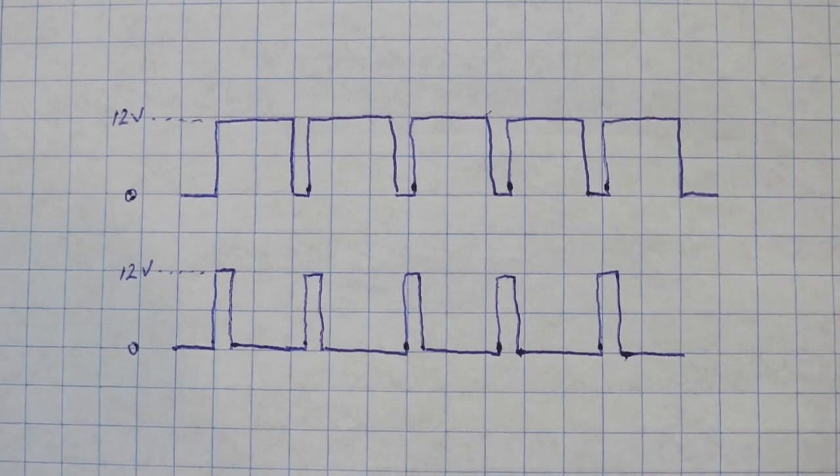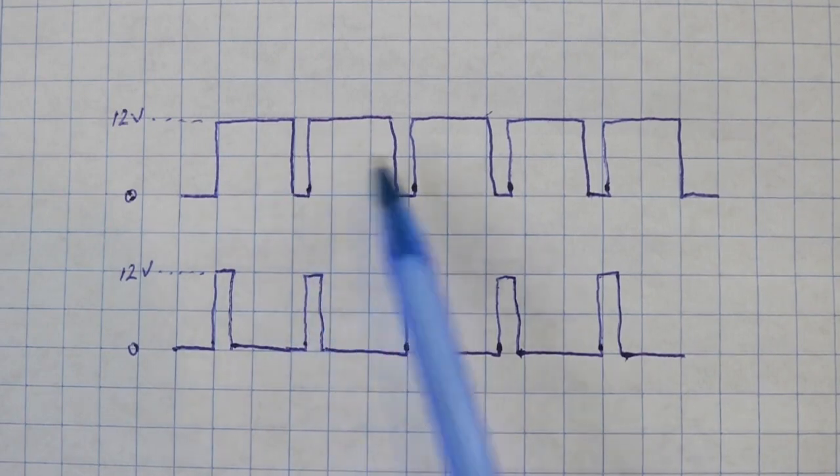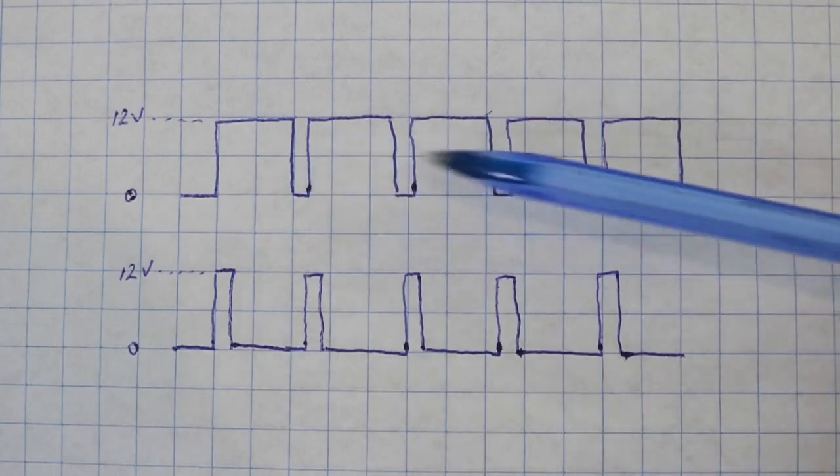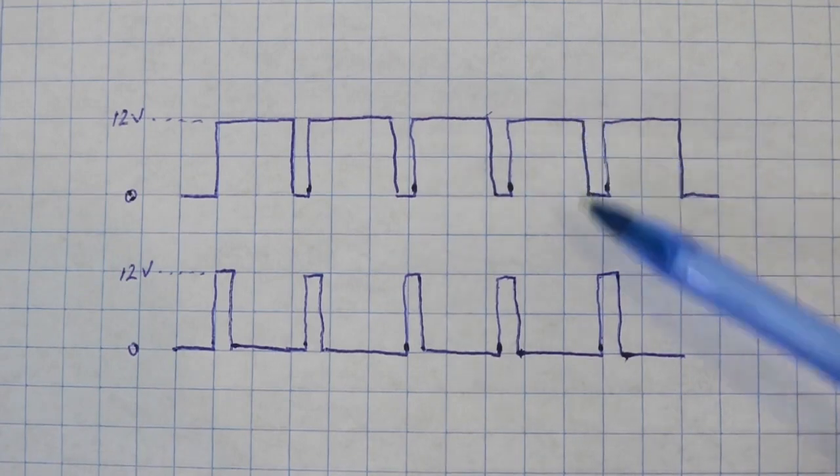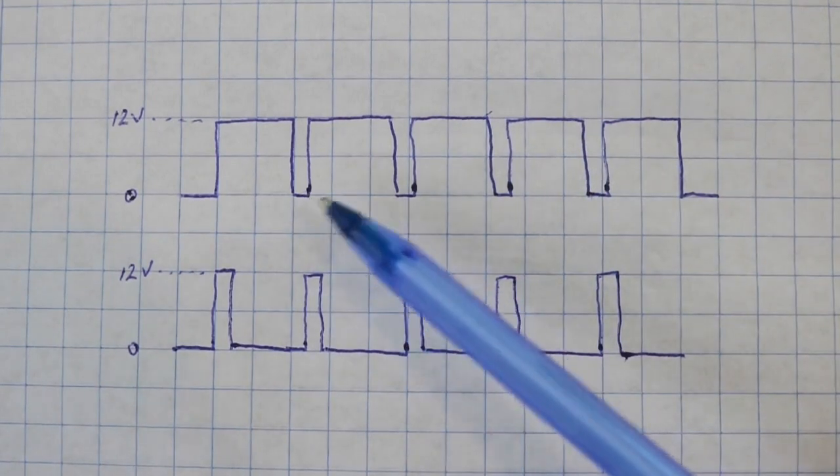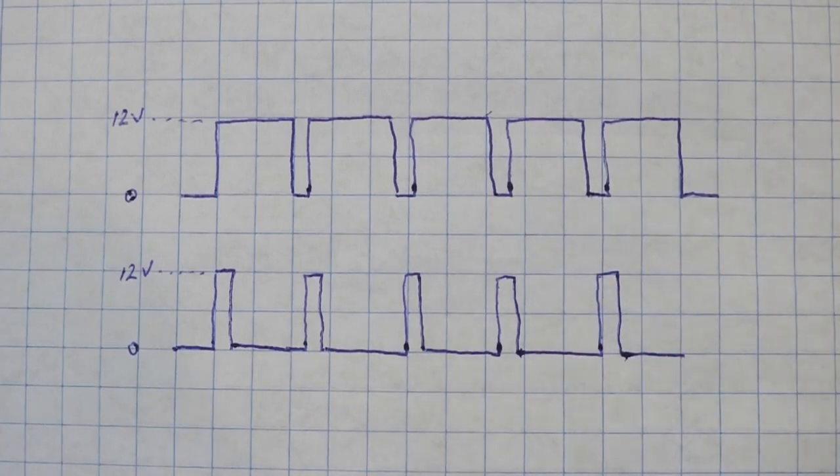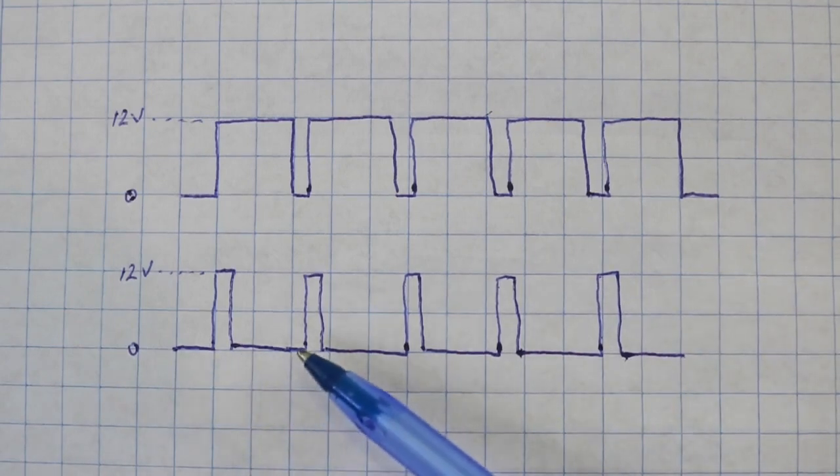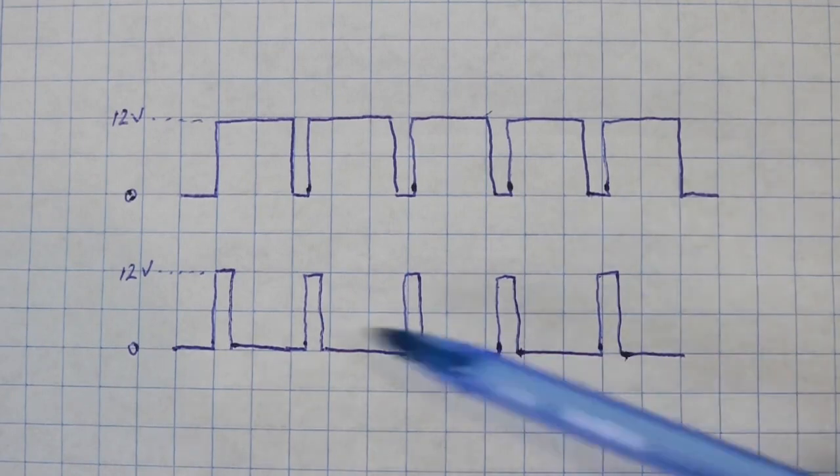These pulses have a certain width, so in this case, most of the time the lamp receives 12 volts and only during a small period of time it receives zero volts. In this other case, most of the time the lamp is at zero volts and only during the pulse, which is a small time, it receives 12 volts.